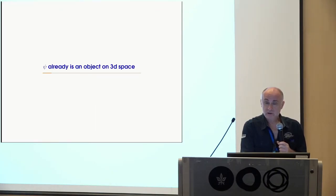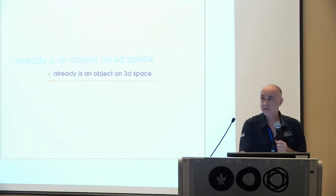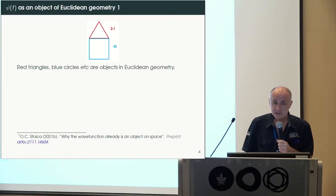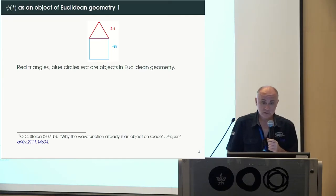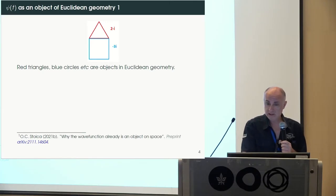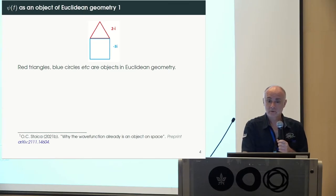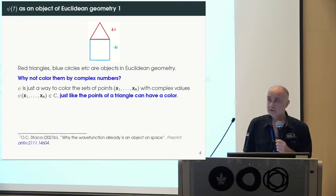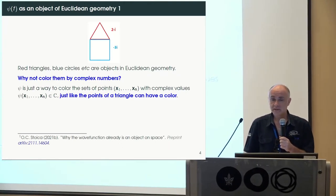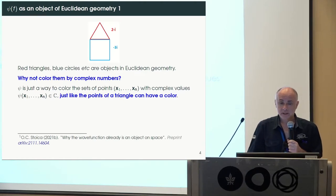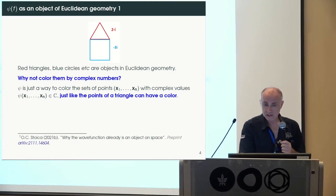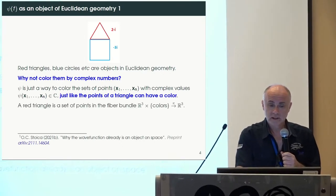I move to whether the wave function can actually be such objects, and my first claim is that it already is — though this doesn't mean too much. I'll show a picture of two geometric figures in Euclidean geometry: a blue triangle and a blue square. We are allowed to color them, so why not color them with complex numbers? Any configuration of points in Euclidean space can be colored with a complex number, and this gives us the wave function.